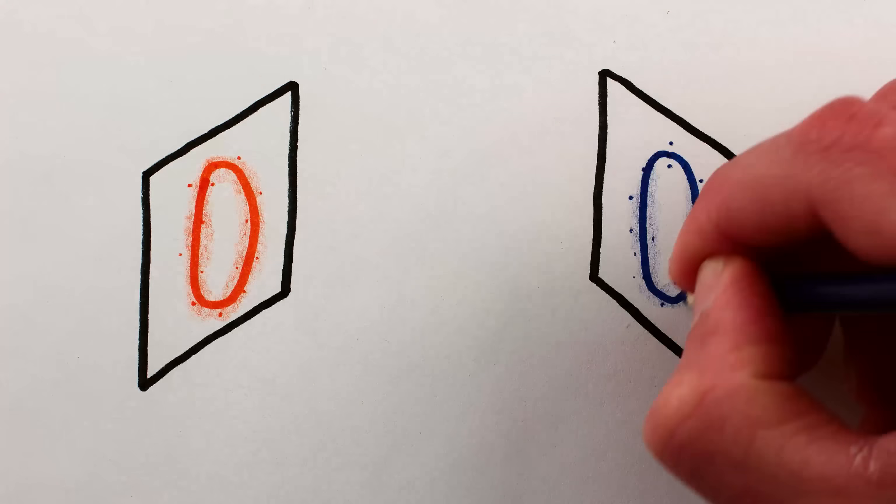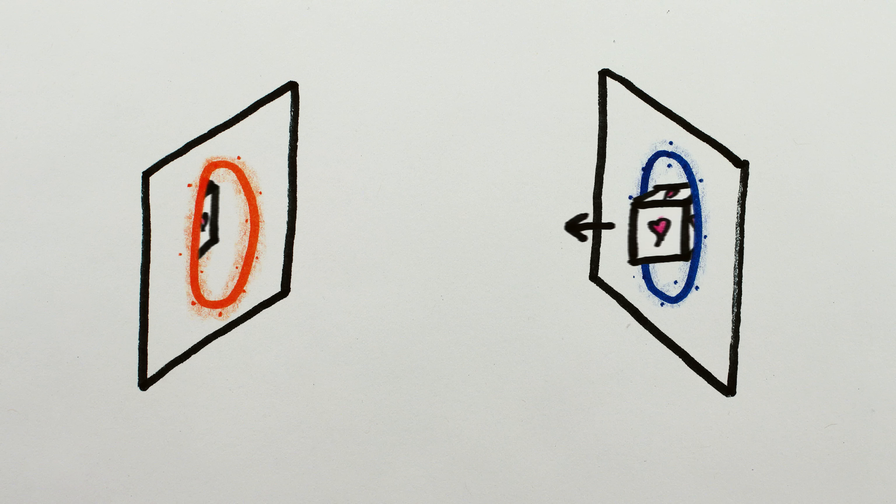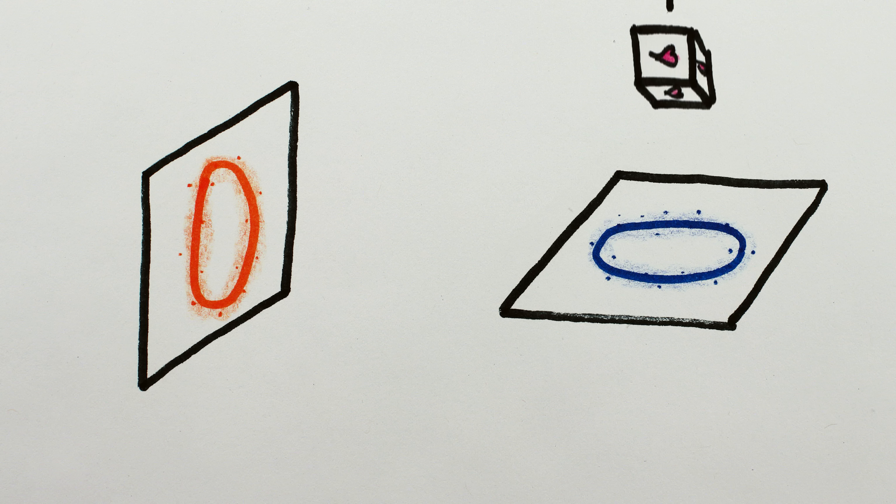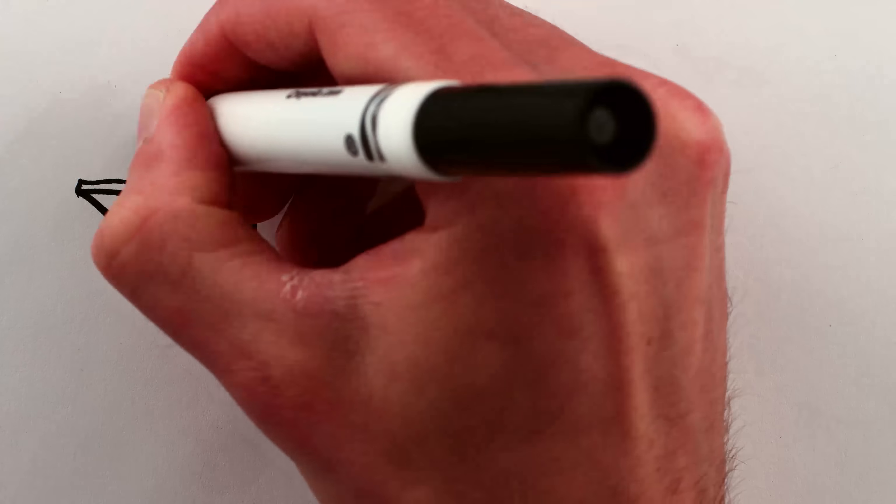In particular, an object entering one end of the portal with a certain speed leaves the other end with the same speed, though if the portals aren't oriented in the same direction then the object will exit in the new direction, but the speed will be the same. And this leads to an apparent paradox.